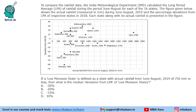Next question: if a low monsoon state is defined as a state with actual rainfall of 750 mm or less, then we identify all states to the left of the 750 mm mark. Since 800 is visible on the axis, everything behind 750 mm qualifies as a low monsoon state. We need to find the median deviation of these low monsoon states.